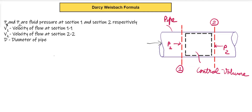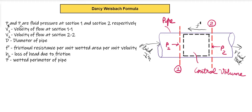From one direction the fluid enters the pipe and from the other direction the fluid comes out of the pipe. We will consider friction, which will act in the opposite direction to the fluid motion. That frictional resistance is denoted using F', where F' is the frictional resistance per unit wetted area per unit velocity. Hf is the loss of head due to friction and P is the wetted perimeter of the pipe, which is equal to the circumference of the circle: pi times D.